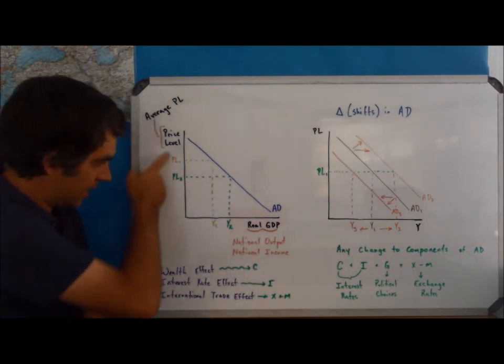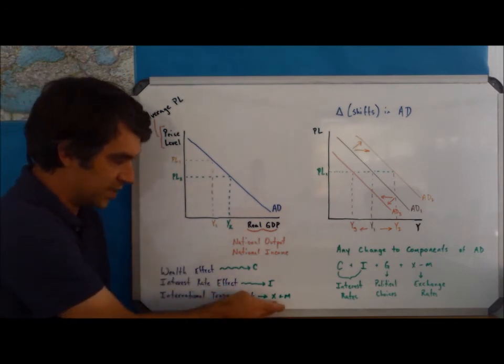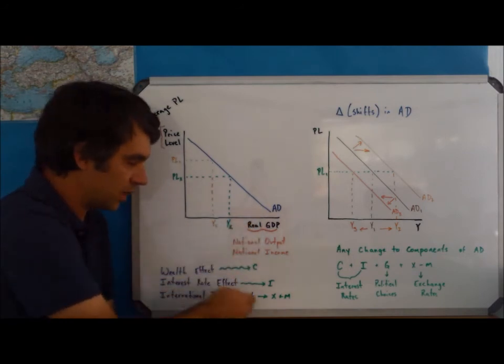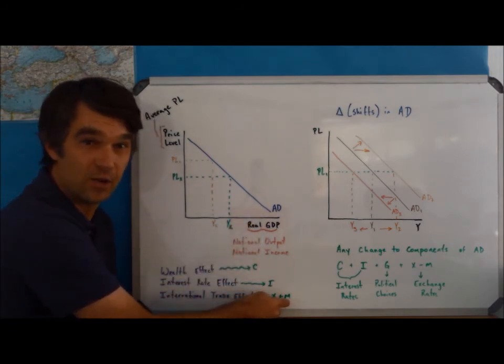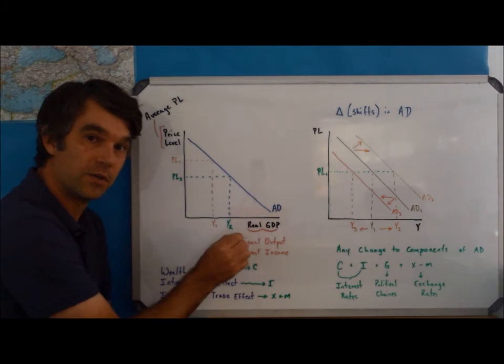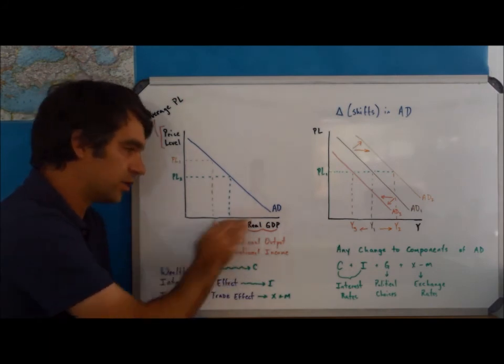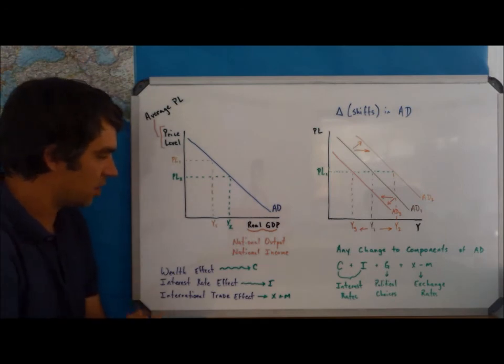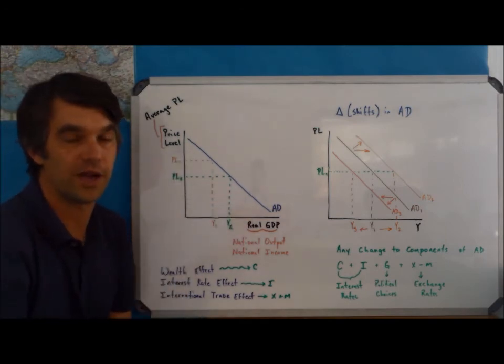Therefore, as price levels fall, we'll see exports increase, so that's more production inside of the country, and we'll see imports decrease, which means people are switching over to buying domestic goods, which is more real GDP or more production inside of the country. So, those are the three reasons for our downward slope of aggregate demand.